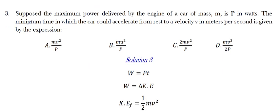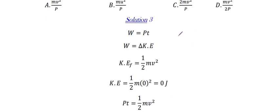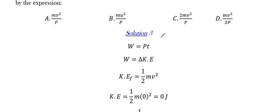Let's move now to question 3, which reads: suppose the maximum power delivered by the engine of a car of mass M is P in watts. The minimum time in which the car could accelerate from rest to a velocity V in meters per second is given by — you are given options A, B, C, and D. It's now your place to find the solution.